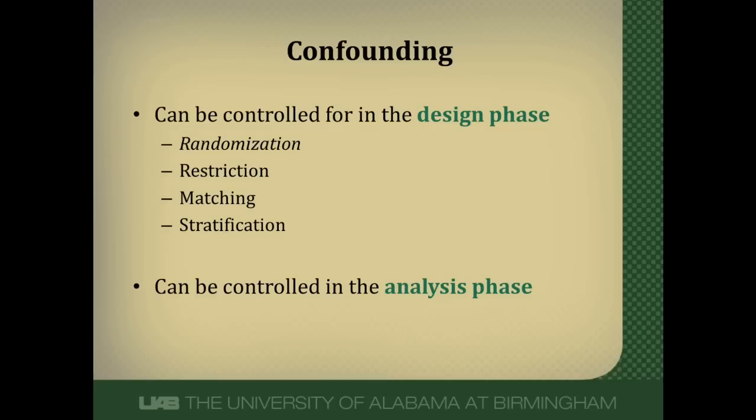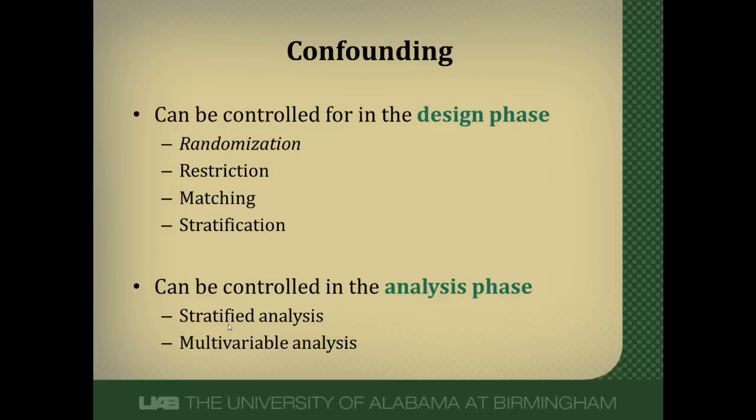Restriction means not allowing a certain factor into the study — for example, including only non-smokers so tobacco use cannot be a confounder. Matching means if I have a 60-year-old smoker in one arm, I put a 60-year-old smoker in the other arm, and smoking is controlled for. In stratification, I break my study into strata — say 60 to 70-year-olds, 70 to 80-year-olds — and within each stratum ages are controlled for. In the analysis phase, stratified analysis or multivariable analysis can be used. In randomized controlled trials, you'll often see stratified randomization and multivariable analysis used together.